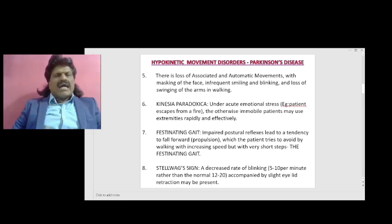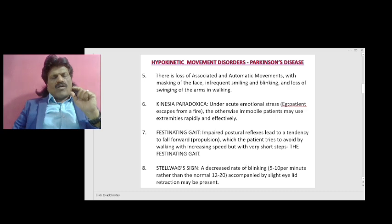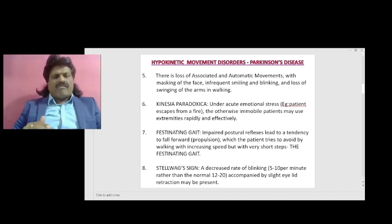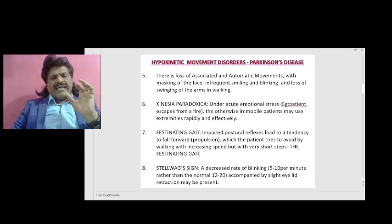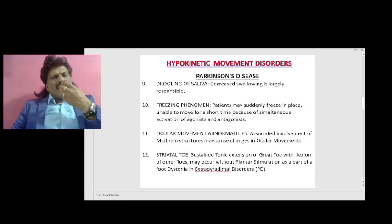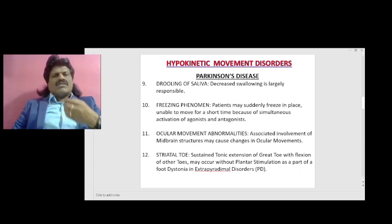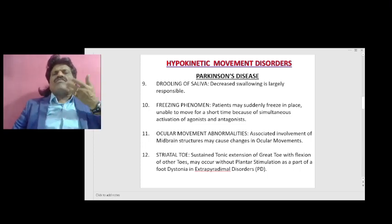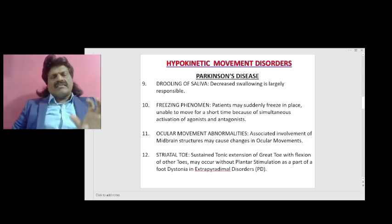Stellwag sign: there is a decreased rate of blinking. Normally blinking is 12 to 20 times per minute, but in persons with Parkinson's disease it may be only 5 to 10 per minute. Slight eyelid retraction may also be present. There will also be drooling of saliva, which is largely due to decreased swallowing.